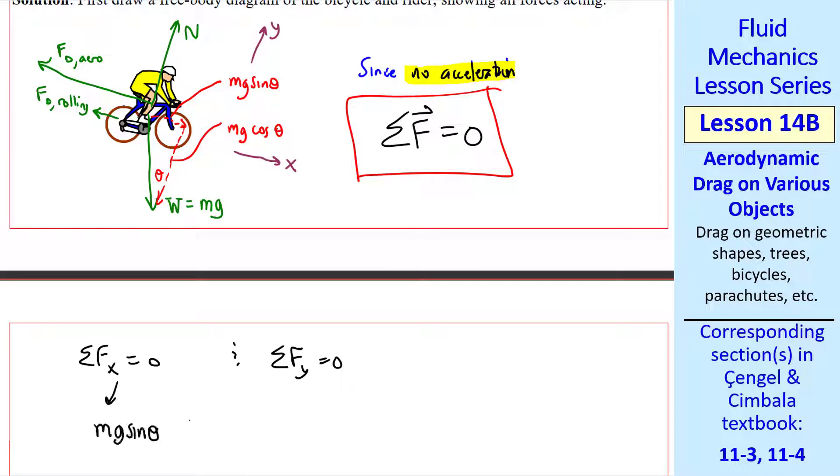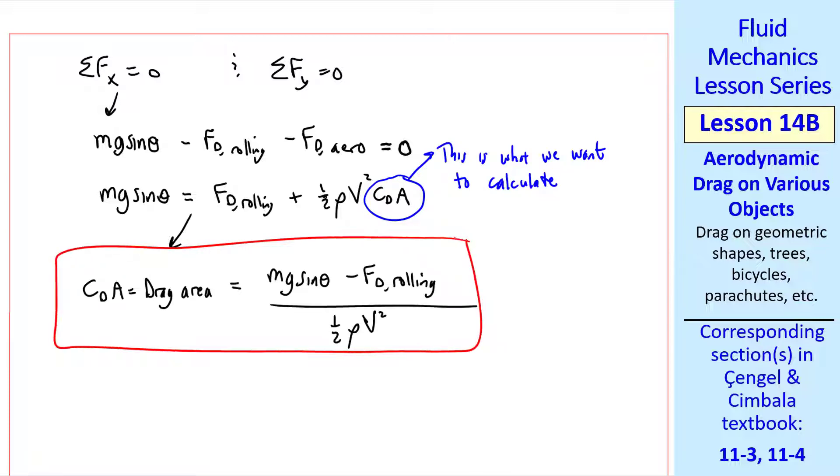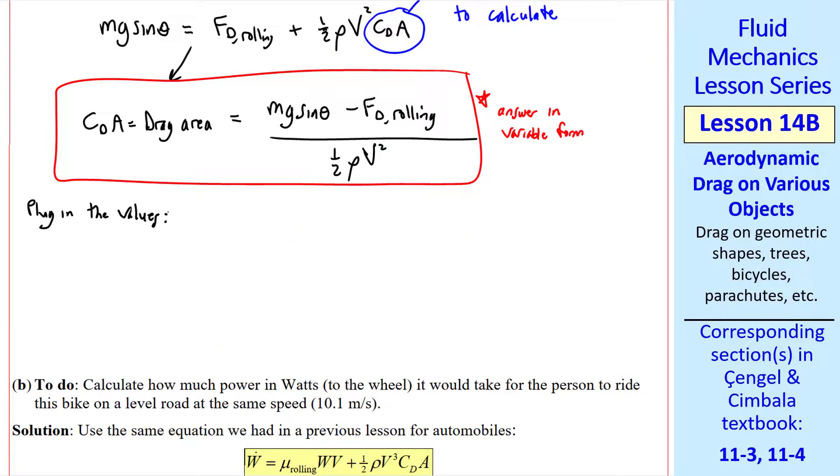The x component has forces mg sine theta minus fd rolling minus fd aero. So you can see that my sketch is certainly not to scale. This component of the weight has to balance these two forces. We rewrite this by plugging in our equation for fd aerodynamic. This is what we want to calculate, the drag area. Solving for CDa, we get our answer in variable form.